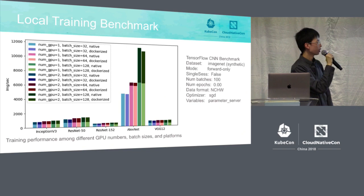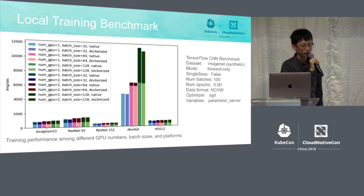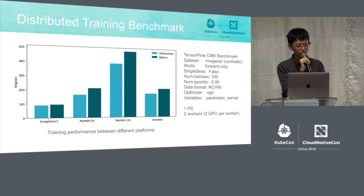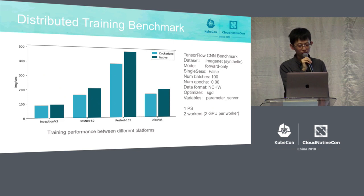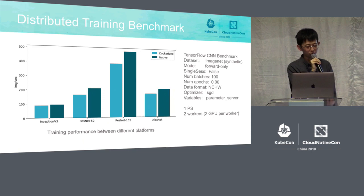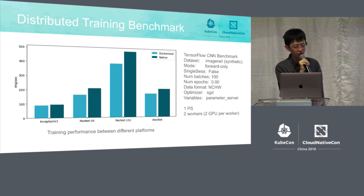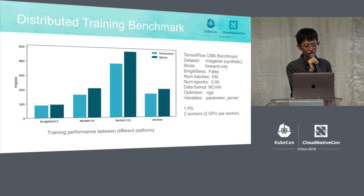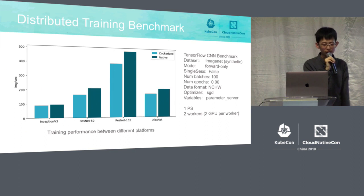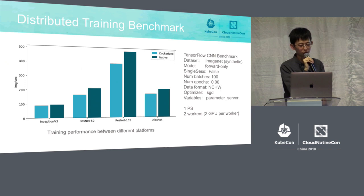This means that in single GPU training based on Kubernetes, the overhead can be essentially eliminated — it doesn't have too much influence. Moving to the distributed training benchmark, we are still using TensorFlow CNN Benchmark. We benchmarked native TensorFlow training against distributed training on Kubernetes. The architecture chosen uses one parameter server and two workers, with each worker having two GPUs. For dispatch, we did not use the Kubernetes default scheduler — we used Manual Dispatch with a Designated PS to keep latency low.